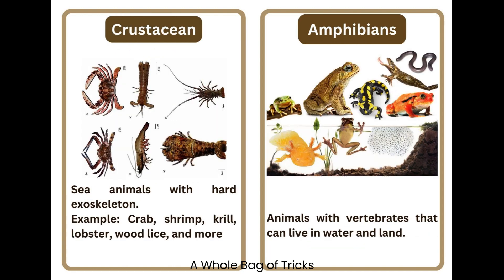Crustacean. Sea animals with hard exoskeleton. Examples include crab, shrimp, krill, lobster, wood lice, and more.